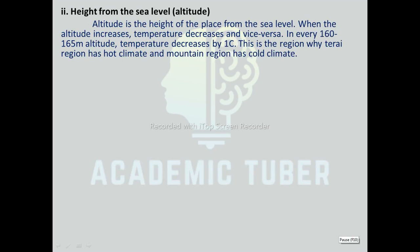The next factor affecting climate is height from sea level, or altitude. Altitude is the height of a place from the sea level. When altitude increases, temperature decreases and vice versa. For every 160 to 165 meters of altitude, temperature decreases by 1 degree Celsius. This is the reason why the Terai region has a hot climate and the mountain region has a cold climate. The density of air is higher at lower altitude as it contains carbon dioxide, dust particles, nitrogen, nitrogen oxides, water vapour, etc., which causes the atmosphere at lower altitude to absorb more heat, while the atmosphere at higher altitude is thinner and absorbs less heat.